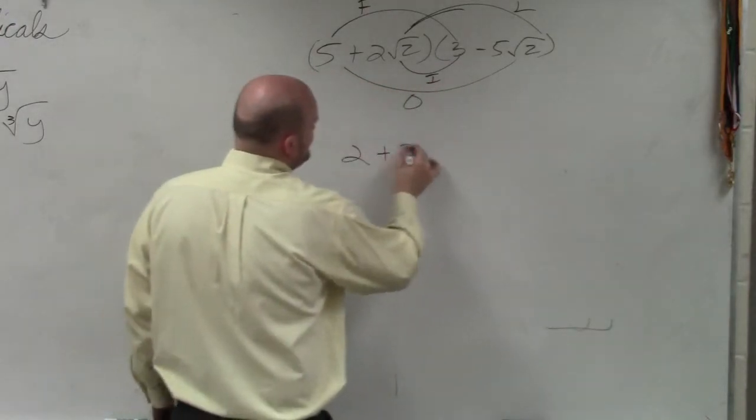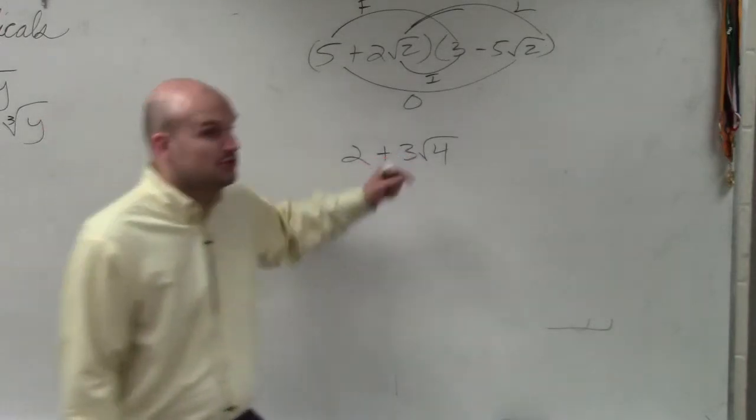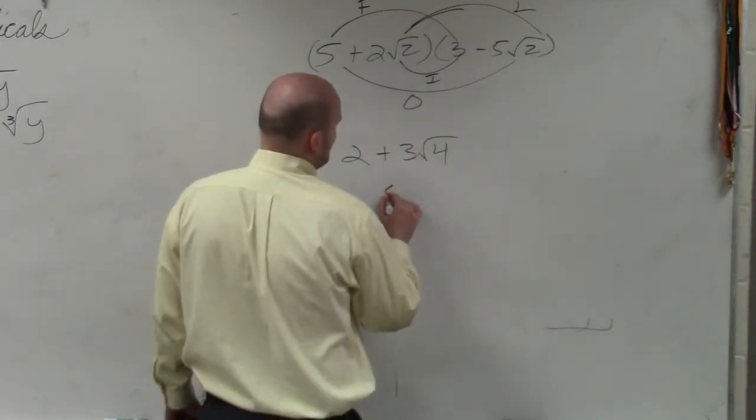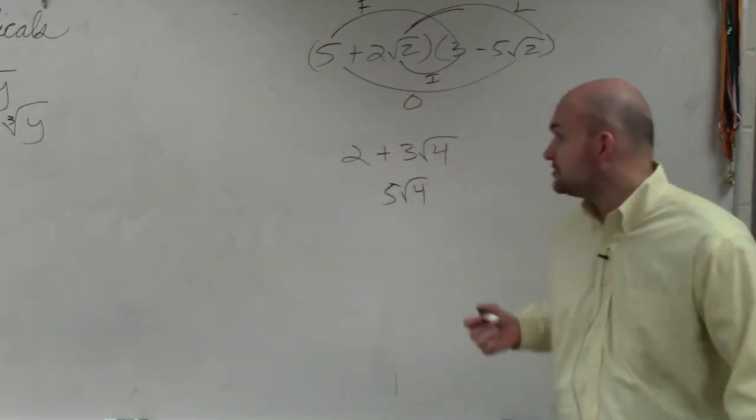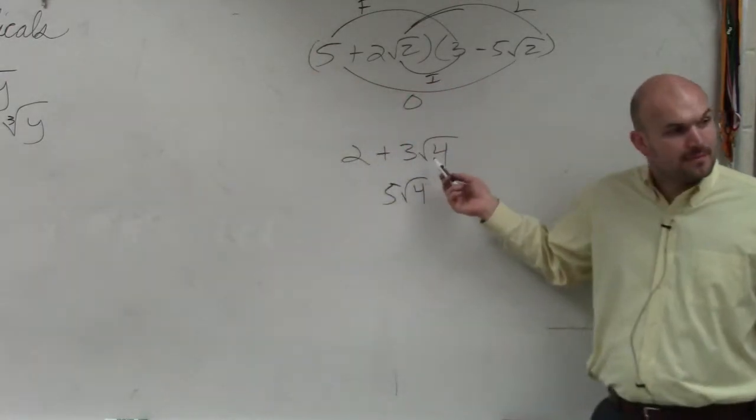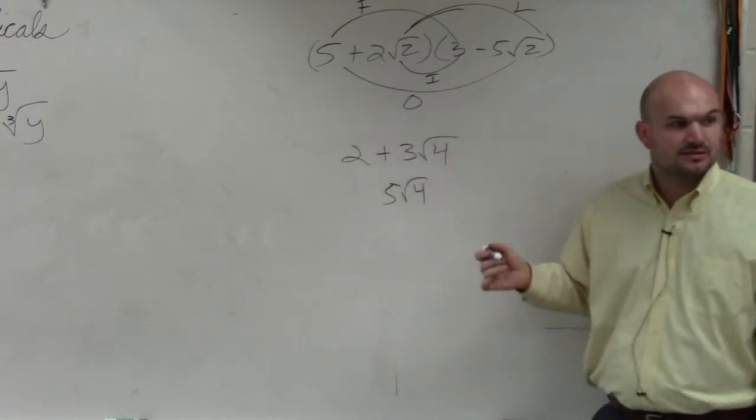2 plus 3 times the square root of 4. Agree with me? OK. So you want to add the 2 and the 3 to give you 5 square root of 4. Correct? All right, now let's see what the answer is. Square root of 4 is what? 2. 2 times 3 is? 6. Plus 2 is? 8.